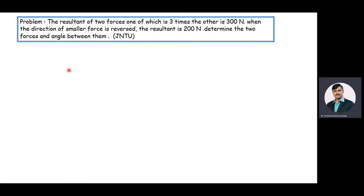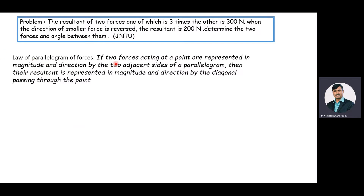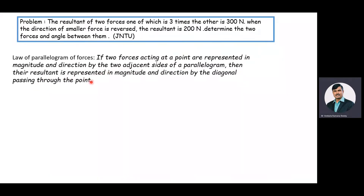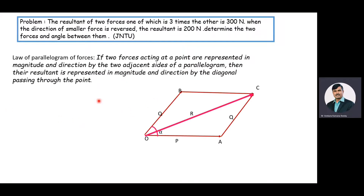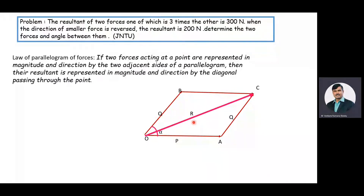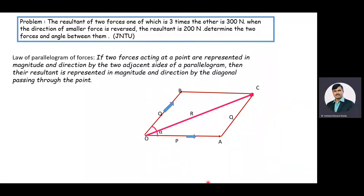The parallelogram law of forces states: if two forces acting at a point are represented in magnitude and direction by the two adjacent sides of a parallelogram, then the resultant is represented in magnitude and direction by the diagonal passing through that point. With forces P and Q acting at point O and angle α between them, the resultant is R = √(P² + Q² + 2PQ cos α).